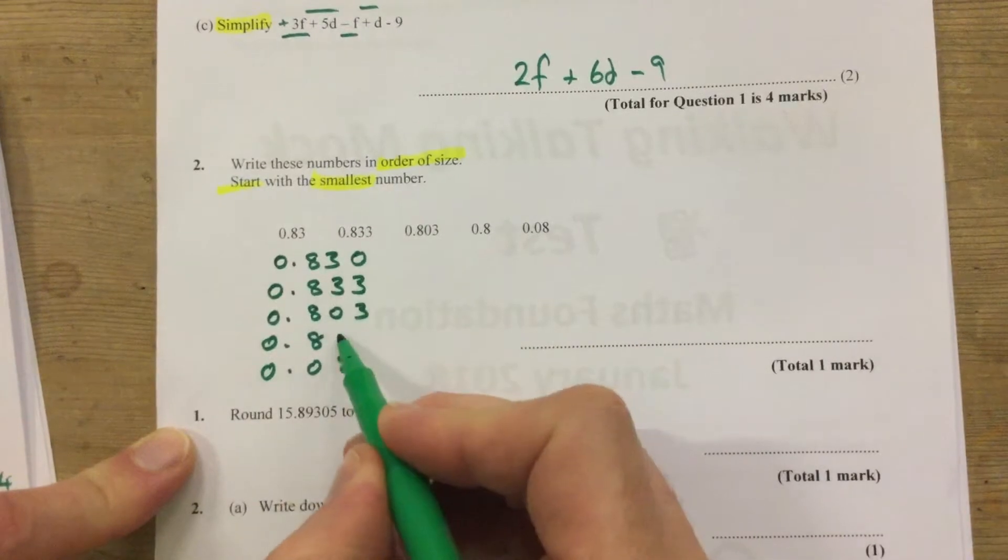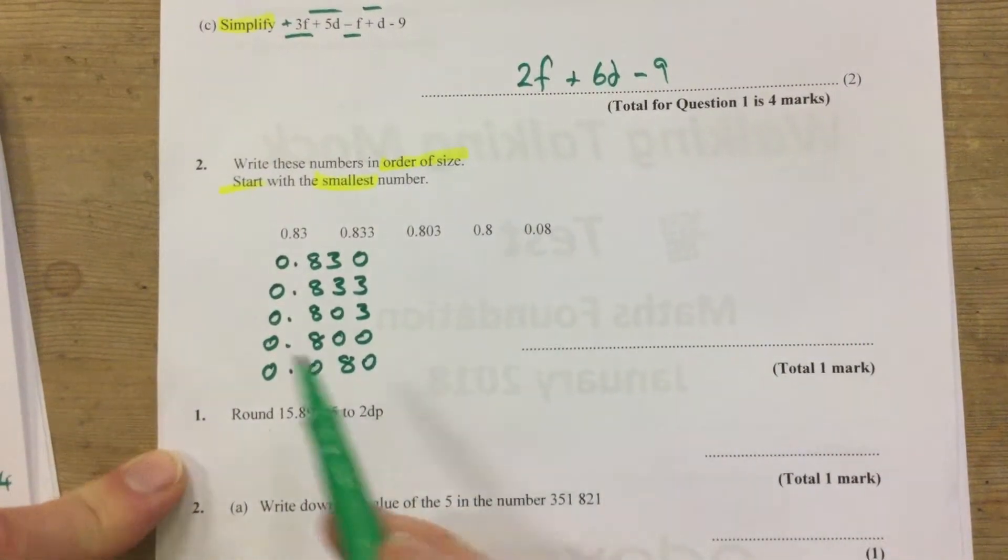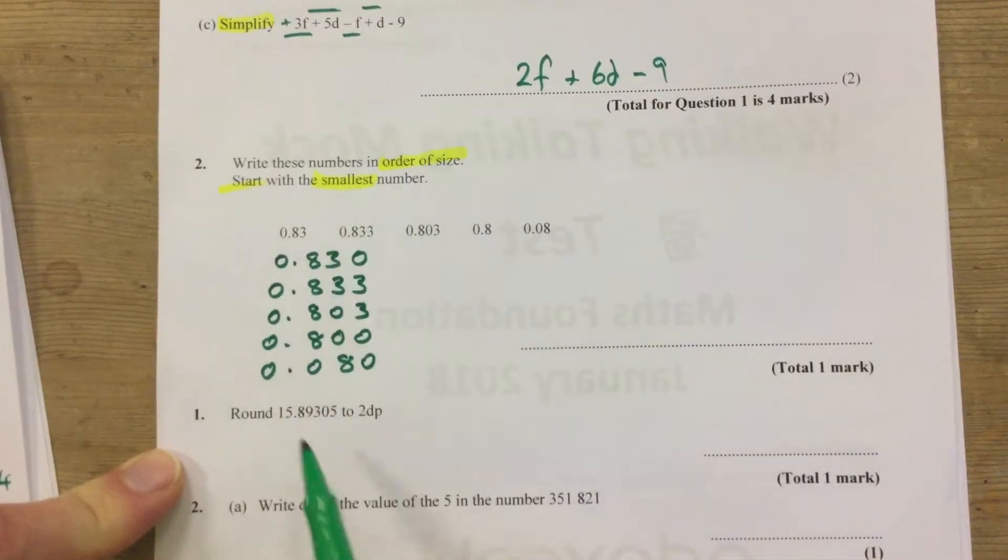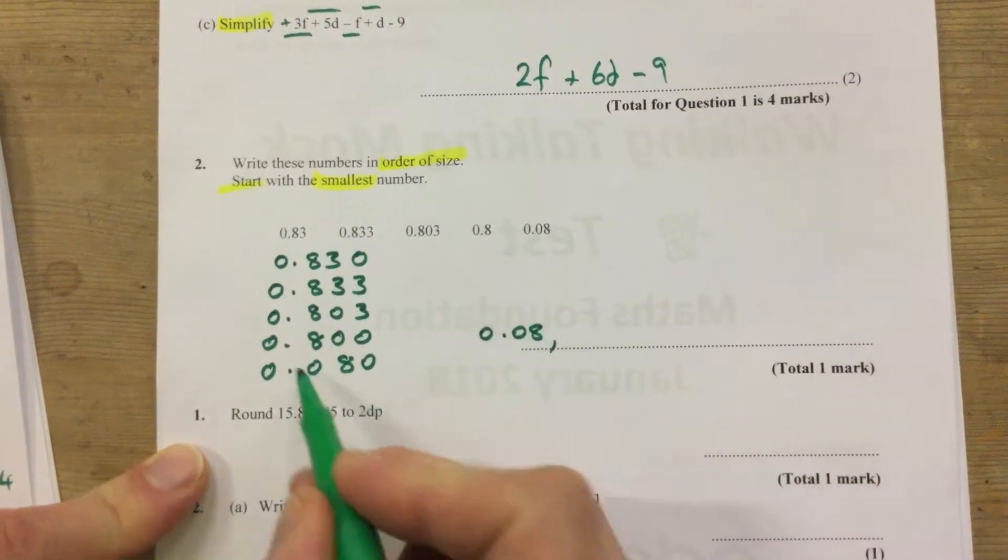Again, I'm going to fill in any gaps because it makes it slightly easier to comprehend. Starting with the smallest number, so the smallest number there, there's nothing in the tenths column, so 0.08.